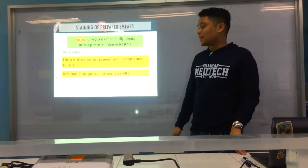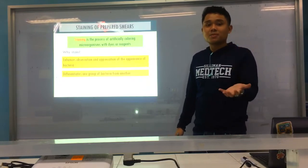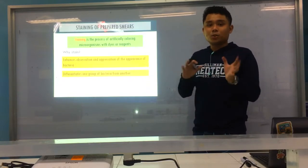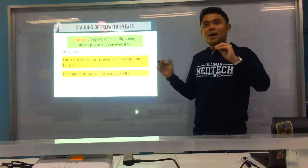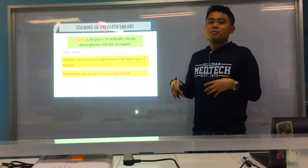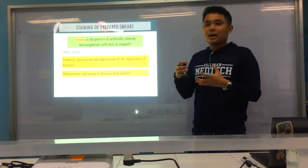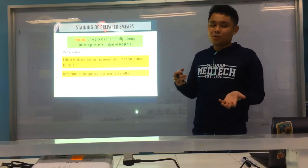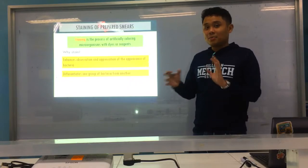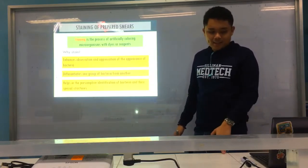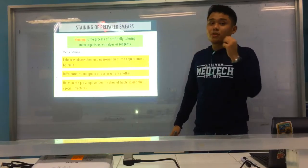Staining also differentiates one group of bacteria from another. It's through the major staining procedure in bacteriology, which is gram staining, that we divide the two major types of bacteria — gram positive and gram negative. From there, since we've narrowed them down to two major groups, it's easier to identify them, isolate them, know the different culture media needed, and the antibiotics ultimately required. Lastly, it helps in the presumptive identification of bacteria and other special structures, because through the addition of colors, many other characteristics can be identified.